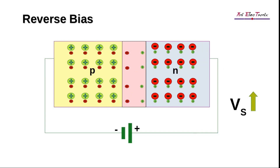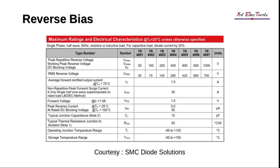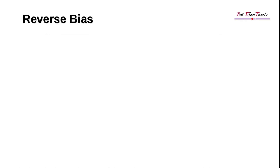However, the reverse bias voltage cannot be increased beyond the maximum allowed voltage rating specified by the manufacturer. When the reverse bias voltage crosses the maximum allowable prescribed voltage and the diode is not protected, it breaks down. This is referred to as the breakdown voltage. Manufacturers provide information on the breakdown voltage of their diodes in their respective data sheets. Breakdown voltages and additional insights will be explored in the Zener diode section.